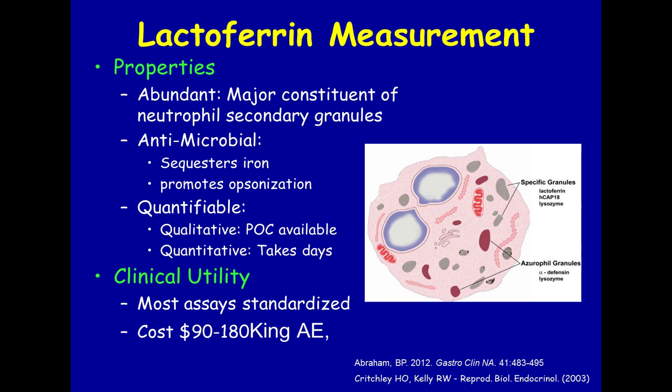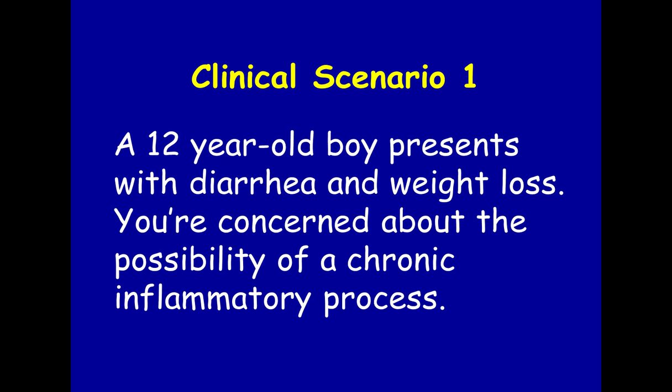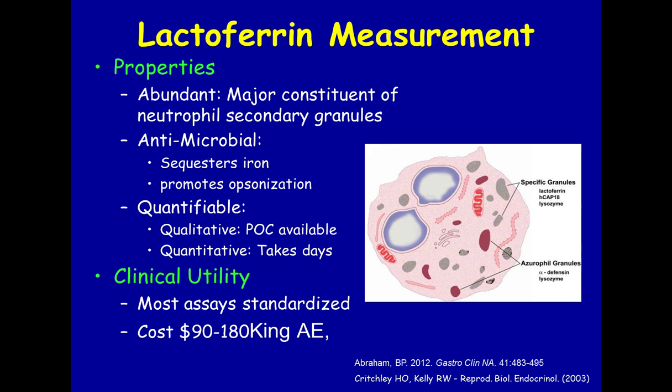Let's talk about lactoferrin specifically. It is found in neutrophils — it's abundant and evolutionarily selected. It sequesters iron, promotes opsonization of pathogenic bacteria, it's quantifiable, and it's very stable at room temperature, even for days. It is measured both quantitatively and qualitatively. Most assays are standardized, and the cost isn't tremendous — $100 to $200, maybe even less. So it's readily available and not terribly expensive, certainly a whole lot better than the screen for fecal leukocytes that we used to use.